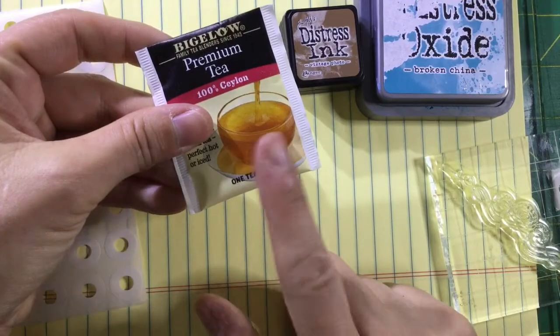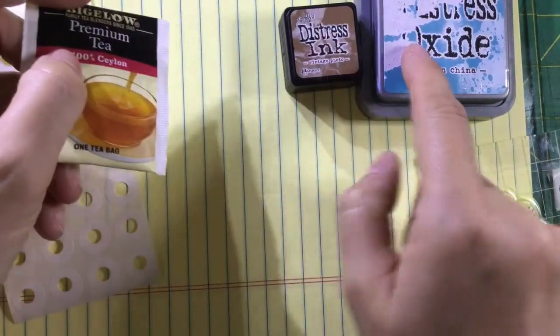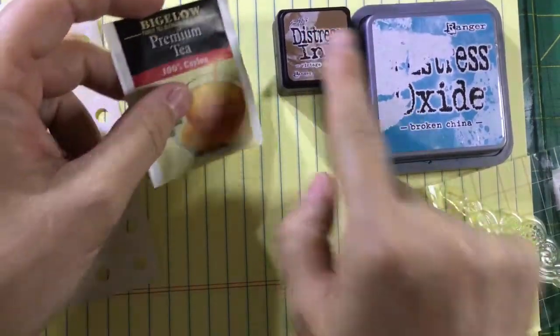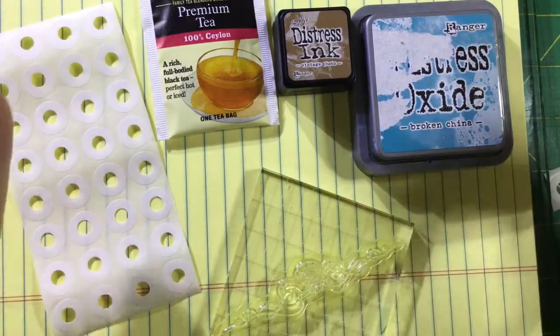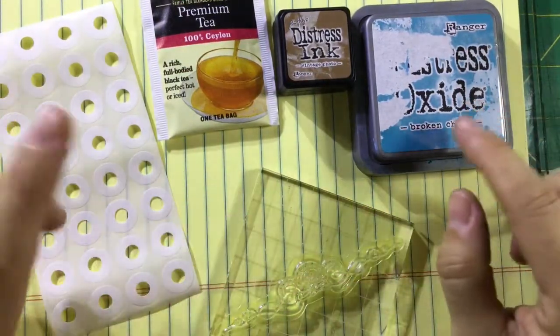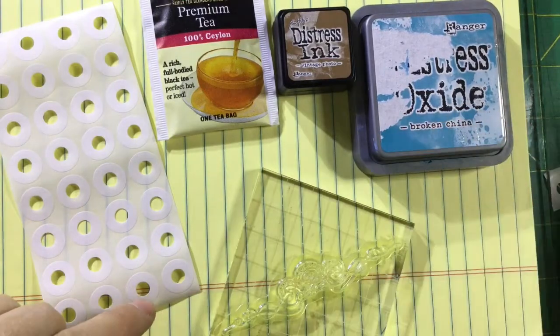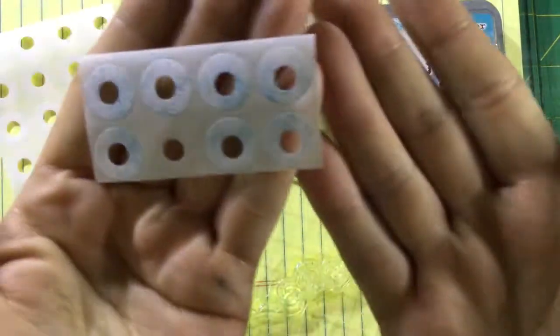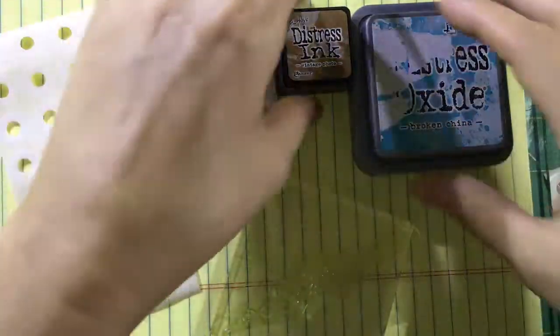The reason I have the Bigelow tea is because we're going to use that to dab into the ink. What do you want as your back layer? In my case, I want the blue as the back layer, like this, and my tea bag will do that for me.